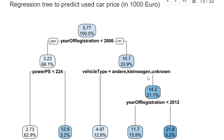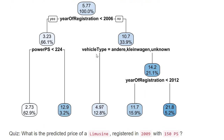This tree we have estimated only uses a subset of those variables. Looking at this graphical representation, let us study what is the predicted price of a limousine — a particular vehicle type registered in the year 2009 with 150 PS. We start at the top of the tree, where we have the first condition: is the year of registration smaller than 2006?